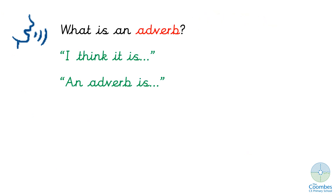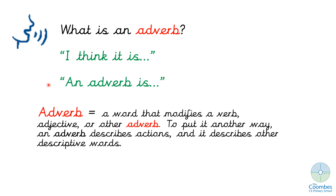We're going to move on to a different question for today that I'd like you to think about. Again, I'd like you to discuss with your adult this question: what is an adverb? You can start by telling them 'I think it is' or 'an adverb is,' and then see if you can give your adult some examples of adverbs. You can pause the video and then I'll show you the definition. An adverb is a word that modifies a verb, adjective or other adverb. To put it another way, an adverb describes actions and it describes other descriptive words.